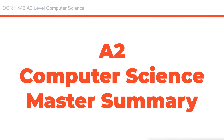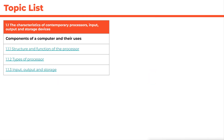Hello there and welcome back to another computer science video. We've moved to a new exam board — we're now looking at OCR, specifically the OCR H446 specification. This presentation will cover both AS and A2. So let's move on and look at this video all about unit 1.1, which is the characteristics of contemporary processors, input, output, and storage devices.